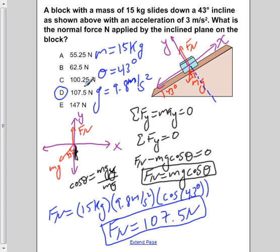107.5 newtons is the normal force of the block when it's on the inclined plane that makes an angle of 43 degrees with respect to the horizontal.